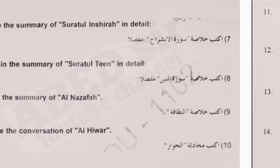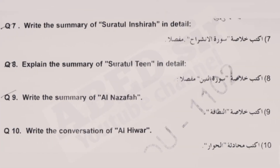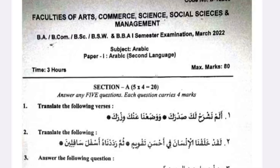These are all the questions. I hope you like this video. I will upload the pics in the Telegram group — the link is mentioned in the description box. This is the previous year question paper of Arabic Language MA. It will be useful to you all. In Section A you need to attempt any five questions, each carrying four marks, out of eight questions.